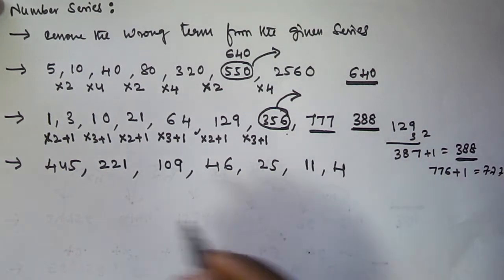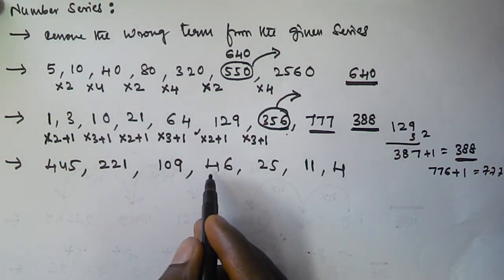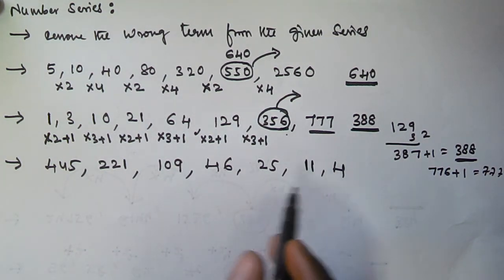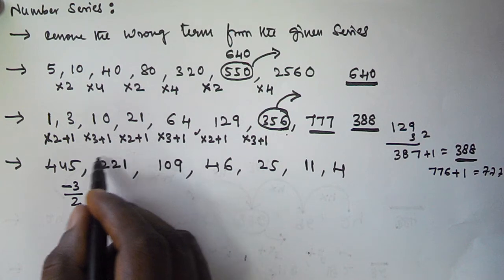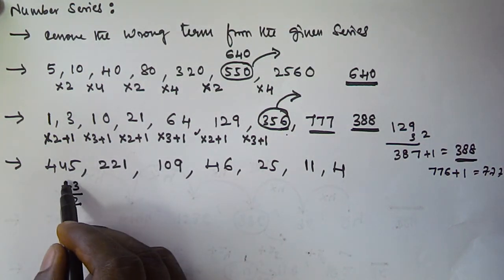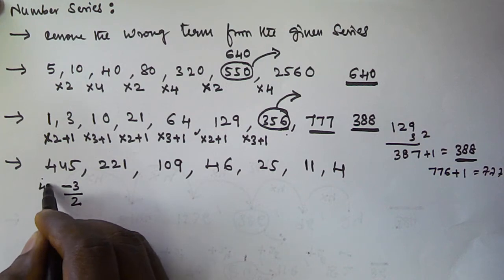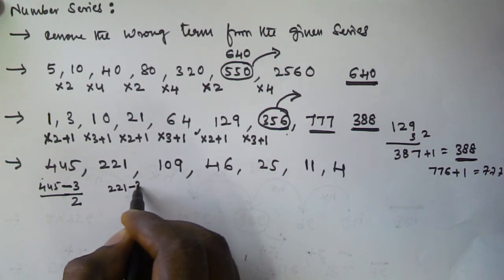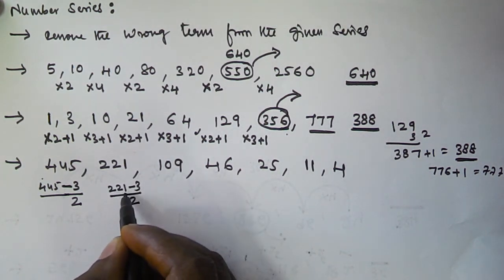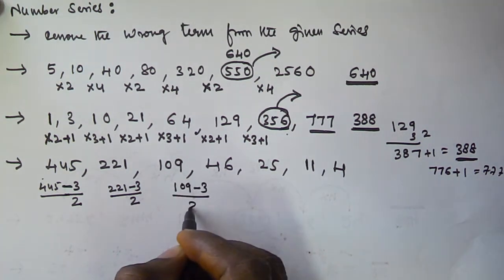Next: 445, 221, 109, 46, 25, 11, 4. The rule is minus 3 then divide by 2. So 445 - 3 = 442, 442 / 2 = 221. Then 221 - 3 = 218, 218 / 2 = 109. Again 109 - 3 = 106, 106 / 2 = 53.